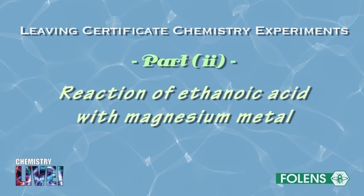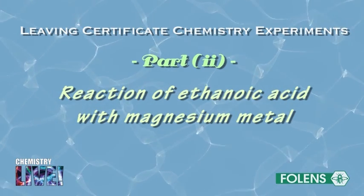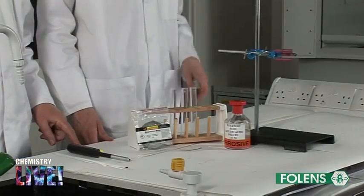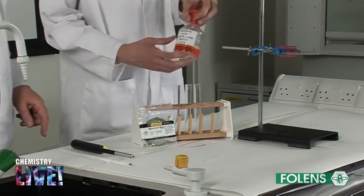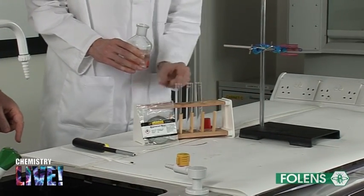We now investigate the reaction of ethanoic acid with magnesium metal. A test tube is filled to about one quarter of its capacity with dilute ethanoic acid.